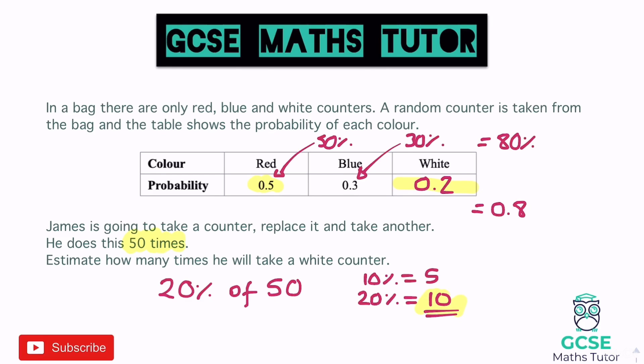The question uses the word 'estimate'. Normally that means to round, but in this scenario it just means we are using probabilities to make our best guess. Like flipping a coin — it's 50/50, but if you flip it twice you won't necessarily get exactly one head and one tail.